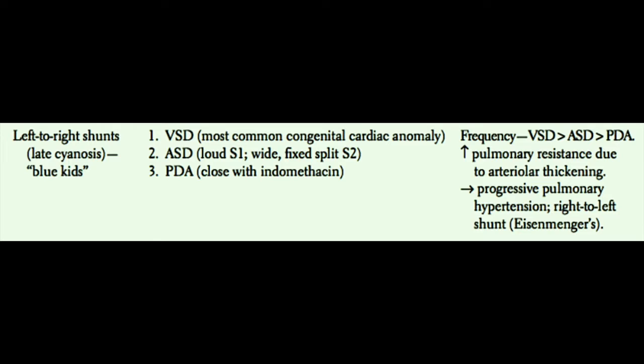The left-to-right shunt diseases cause late cyanosis — these children develop cyanosis later in life. These all have three-letter acronyms: the VSD, the ASD, and the PDA. The VSD, or ventricular septal defect, is the most common congenital cardiac anomaly. Next comes the ASD, or atrial septal defect; remember these patients will develop a loud S1 and often have a wide fixed split S2 heart sound. Third is the patent ductus arteriosus, or PDA, which can be closed by administration of indomethacin.